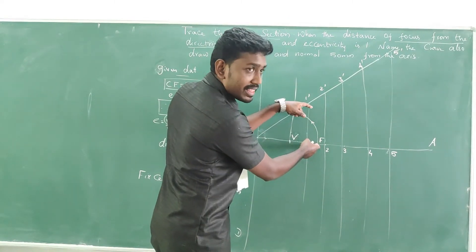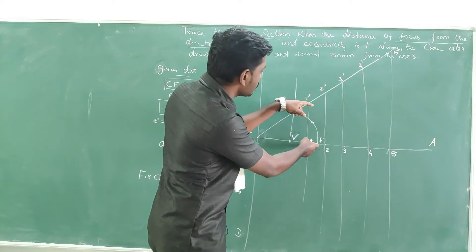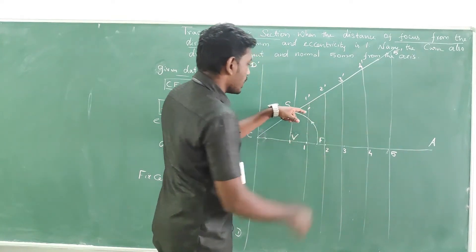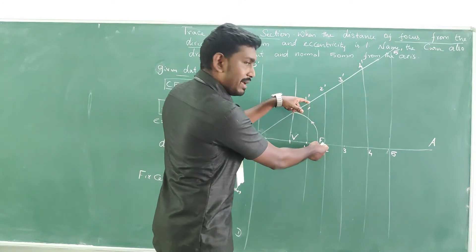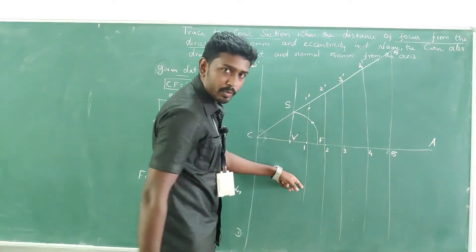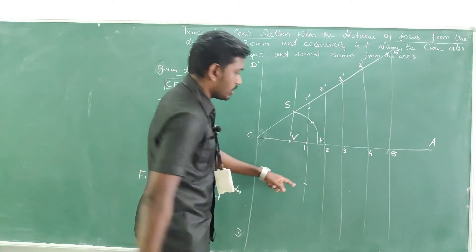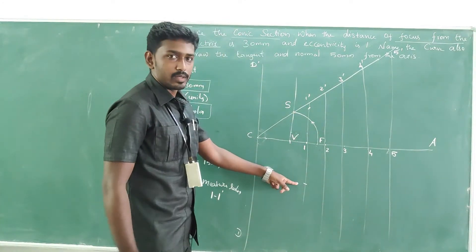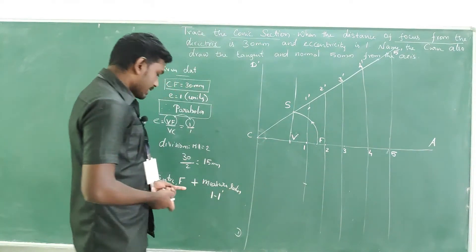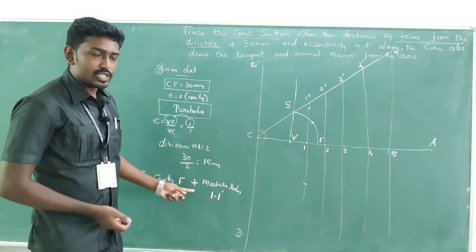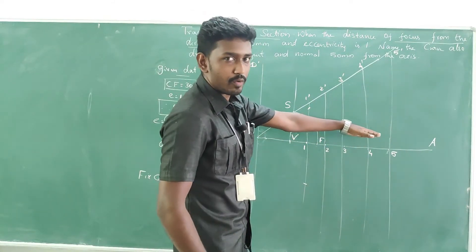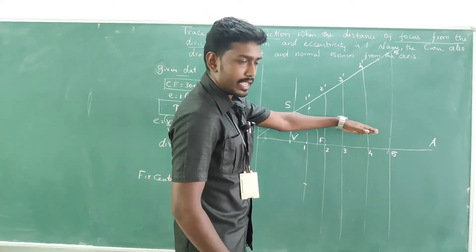Pick the first point with a cut mark on the first line, then with the same measurement cut it in the lower portion as well. Follow the same procedure for the rest of the consecutive lines: take measurement 2 to 2', keep focus F as center, give a cut mark on the second line, and trace it in the lower portion too.